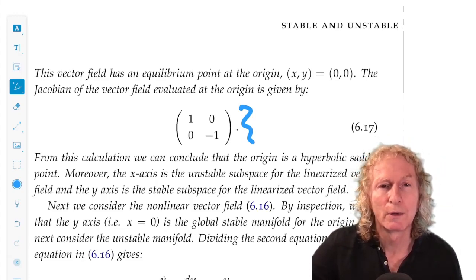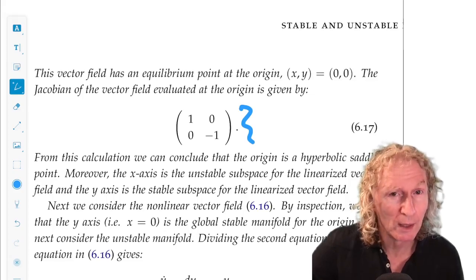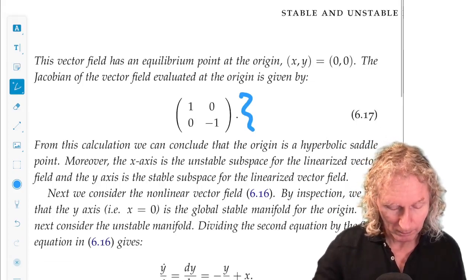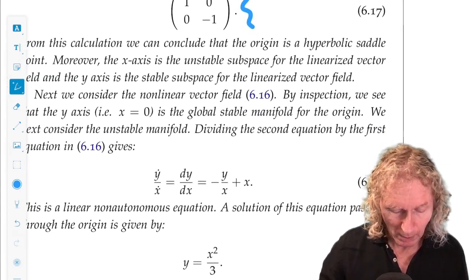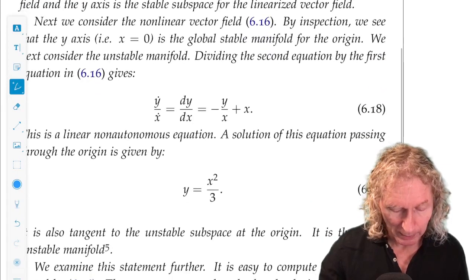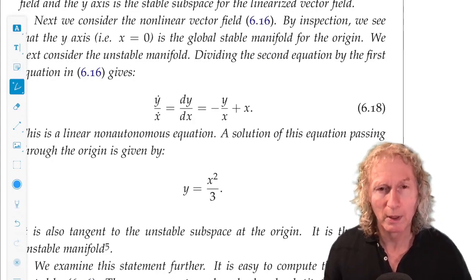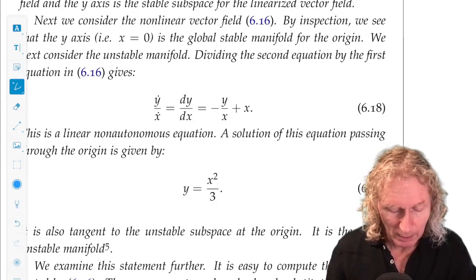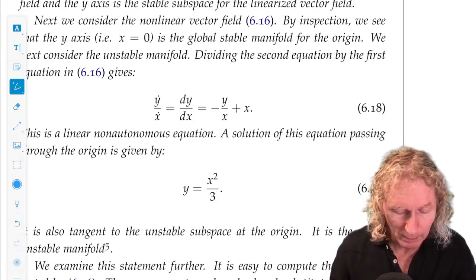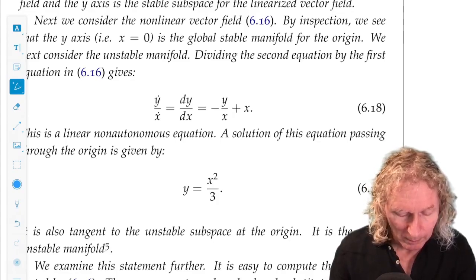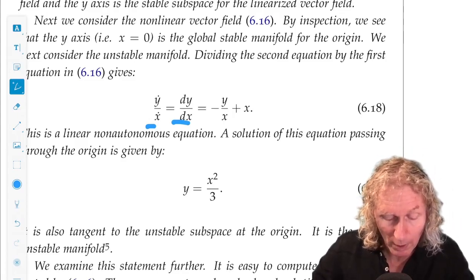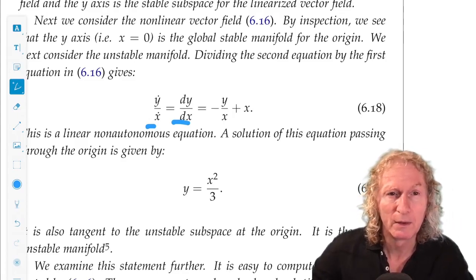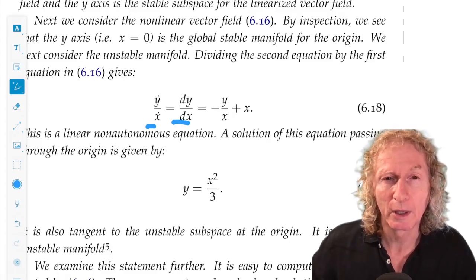All right. So, we want to find the unstable manifold of the origin. One way to do that, I'm going to show you two ways, is to divide y dot and x dot. In this way, using the chain rule, that gives us dy/dx equals minus y over x plus x. This is a linear non-autonomous equation.